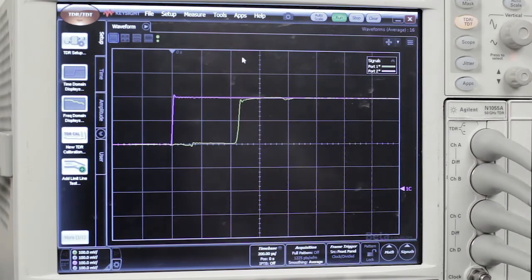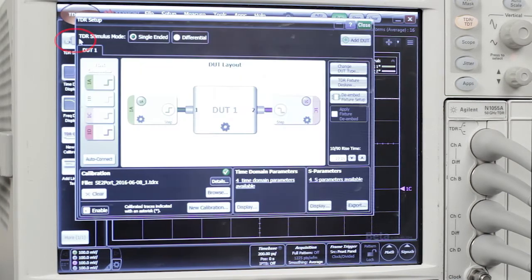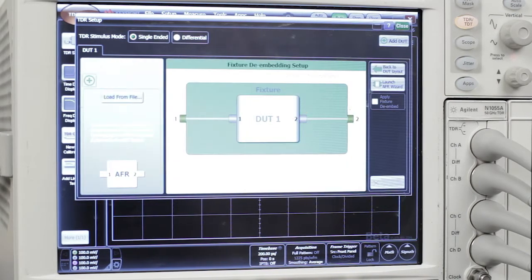Now that we've calibrated the TDR, we're going to use the calibrated TDR to characterize our fixture, and we can start back in the DUT setup. We call up the de-embedding menu, and that lets us launch the automatic fixture removal wizard here.